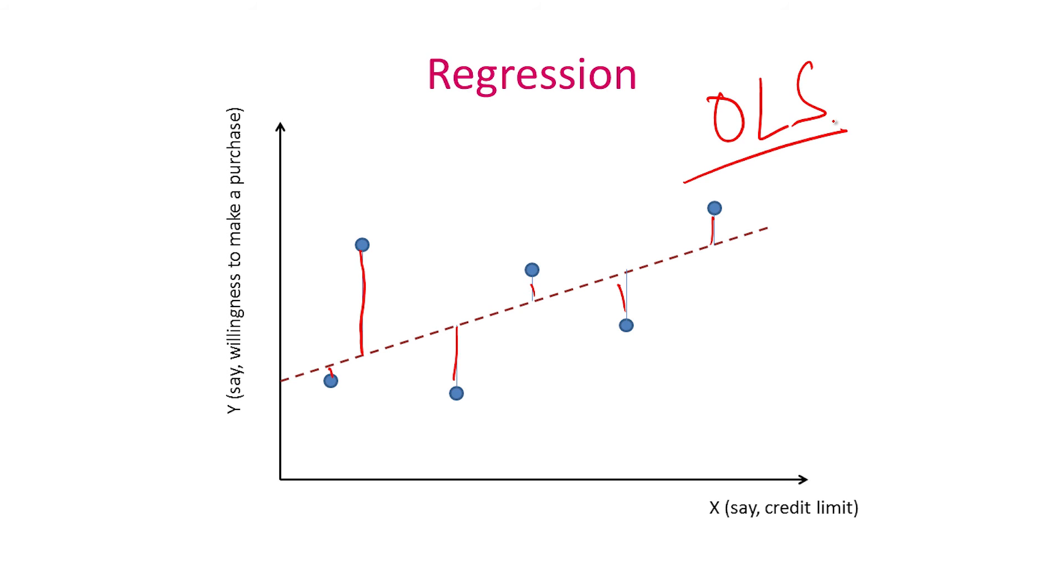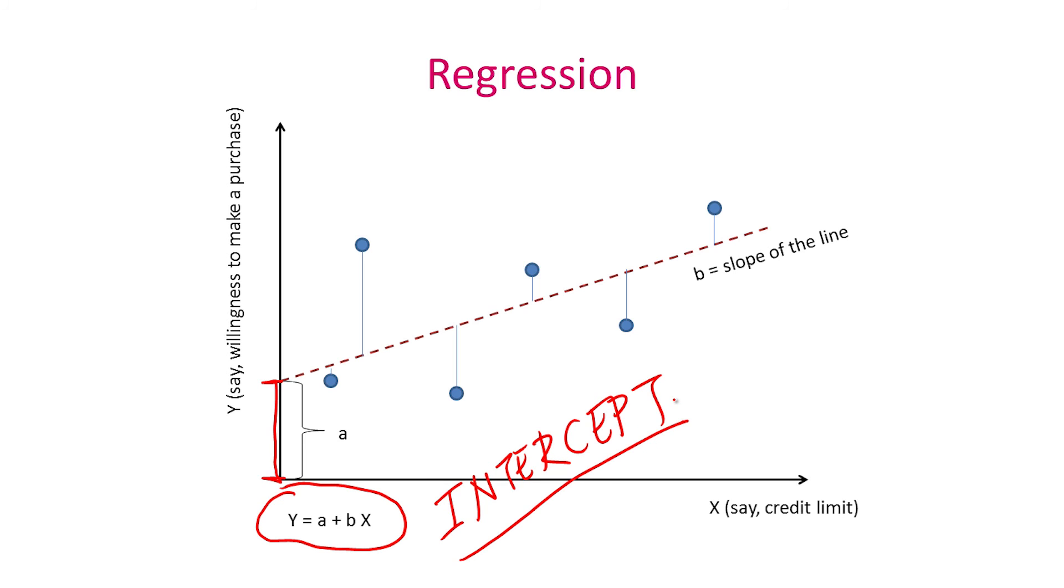So again, a regression line is a line that best explains the relationship between x and y. And in fact, that line can be modeled by an equation like this one, y equals a plus b multiplied by x. Now what is a? The a represents this height, the location where the regression line actually hits the y axis. When x is zero, what is the value of y? We often call this the intercept of the regression line. So the intercept talks about the basic value, the baseline value of y, when x doesn't exist or when x equals to zero.